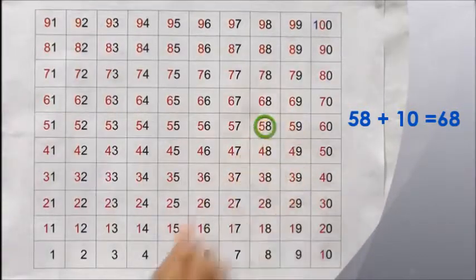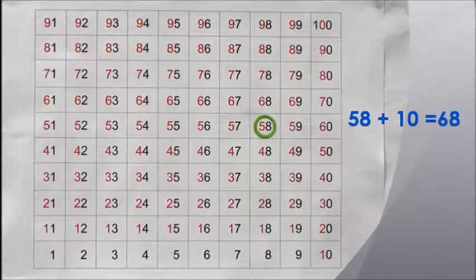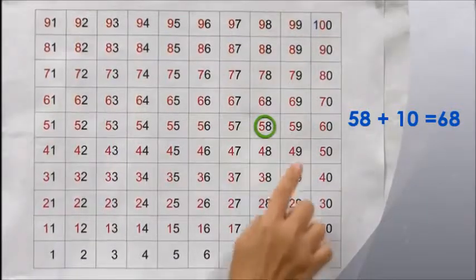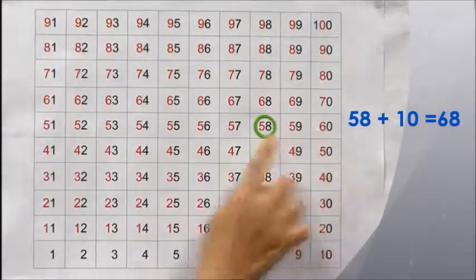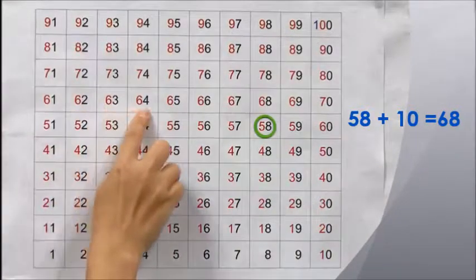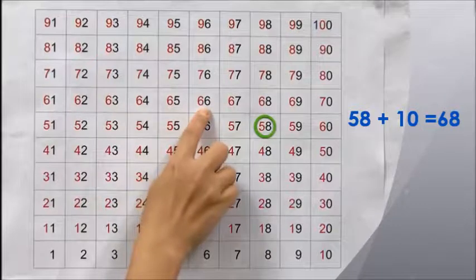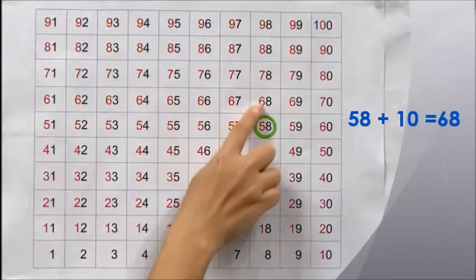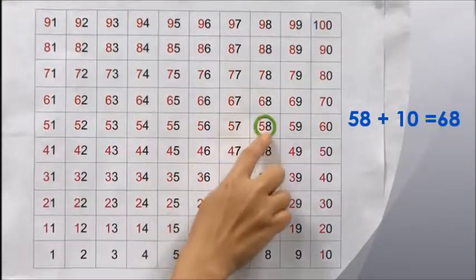We move 10 steps forward from 58: 1, 2, 3, 4, 5, 6, 7, 8, 9, 10. The answer is 68.